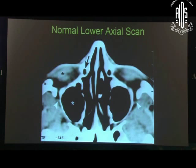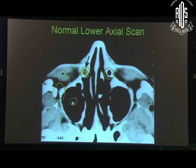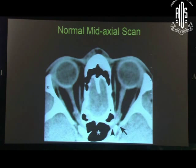What does the normal lower axial scan contain? The arrow points to the nasolacrimal duct — if somebody has nasolacrimal duct obstruction it will be seen as a white or grey haze within it; a tumour will show bone destruction along the duct. There is also the inferior orbital fissure leading on to the pterygopalatine fossa. In the normal mid-axial scan: this is the sphenoid sinus; the optic canal; and lateral to the optic canal is the superior orbital fissure.